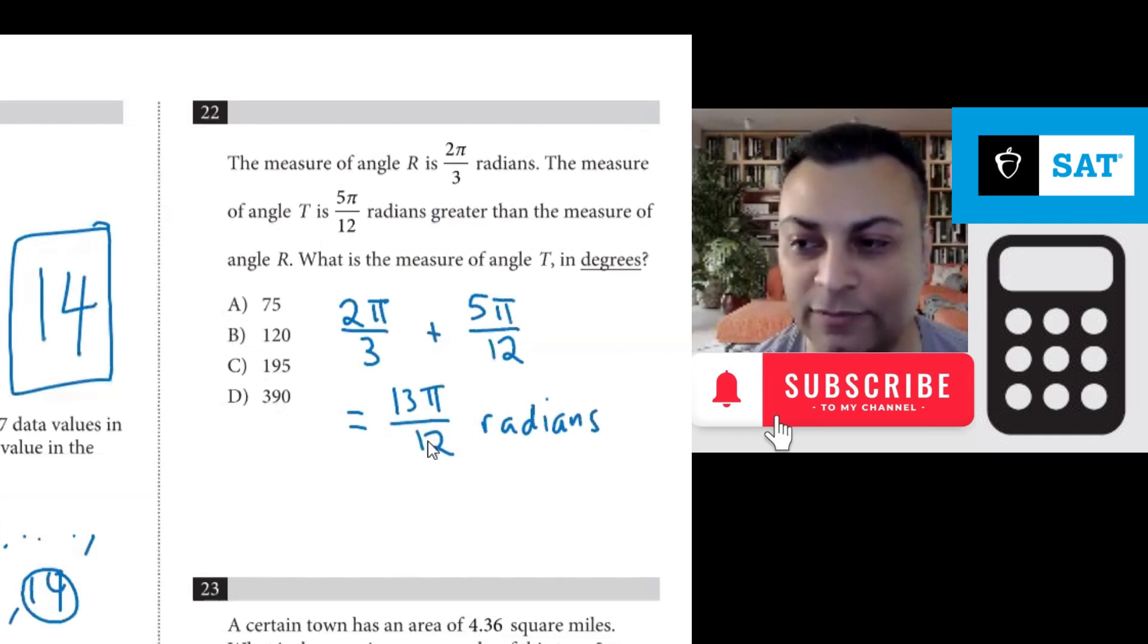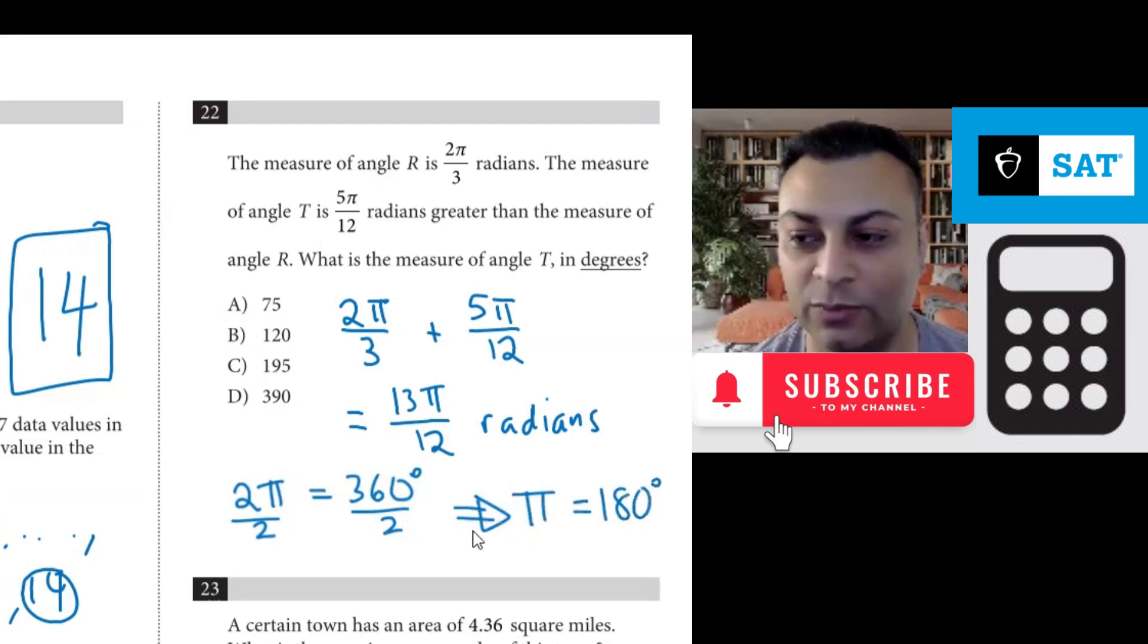So we would like to convert this to degrees and we saw earlier that in the formula sheet that 2π is 360 degrees. A convenient way is to divide this by 2 and then you would get the relationship π is 180 degrees. 360 divided by 2. Go ahead and use a calculator and you'll see it's 180. So π is 180.